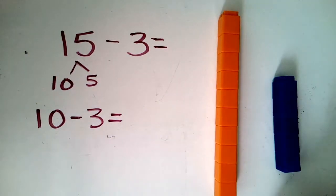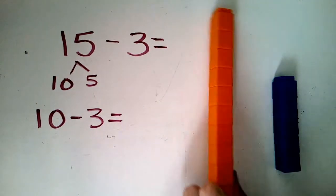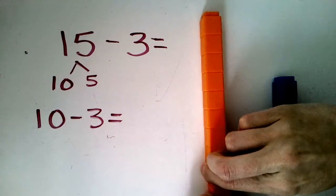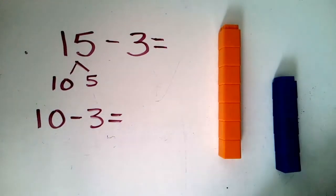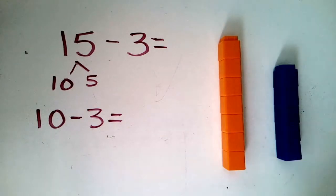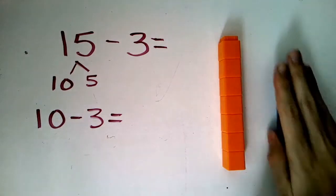This is the number sentence we would write first. We would start with the 10. Here's our 10. Remember, 10 is our friend. That's why we're using 10 first. We're going to take from 10 what we are taking from in our problem. So we have 15 take away three, so we're going to do 10 take away three first.